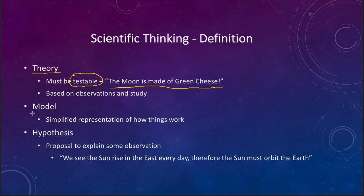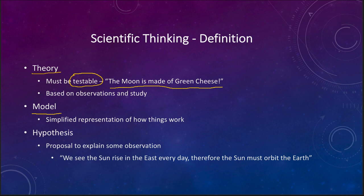We also use models in astronomy. Models are ways of simplifying how things work. To understand a galaxy and its motions we have to understand how matter is distributed in it — we cannot possibly model exactly how every atom is arranged, so we have to make assumptions and approximations. Those simplifications may have an impact on our final results coming out of the model.